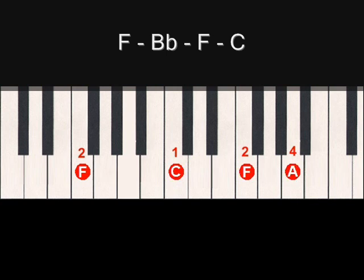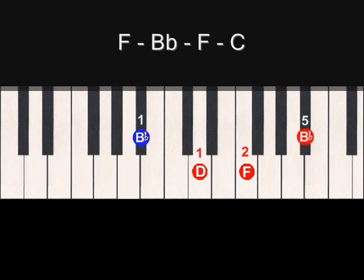From there, to play the Bb chord, our thumb in our left hand is going to reach up to play the Bb. And in our right hand, our thumb is going to slide up to the D, the second finger pointer finger is already on F, and our five, our pinky, should be right next to the Bb already, which will give us the Bb chord.